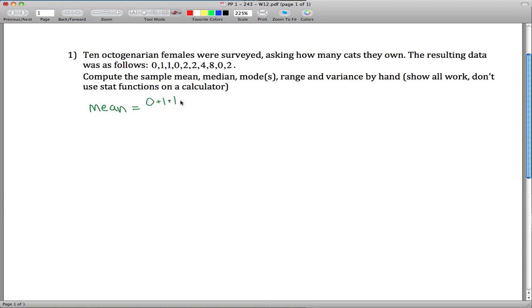The way you get the mean is by adding all these guys up so 0 plus 1 plus 1 plus 0 plus 2 plus 2 plus 4 plus 8 plus 0 plus 2. And then divide by how many observations you got, 10 in this case. Let's see, 1, 2, 3, 4, 5, 6, 10, 18, 20 divided by 10 is 2. So we figured out that our mean is 2. On average, each of these ladies have 2 cats.